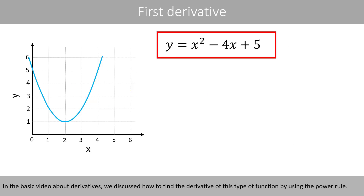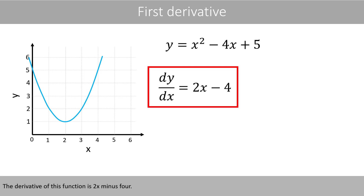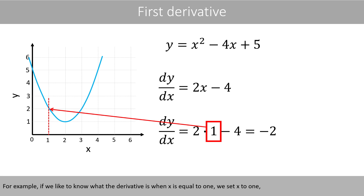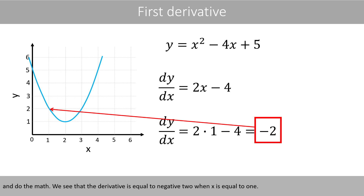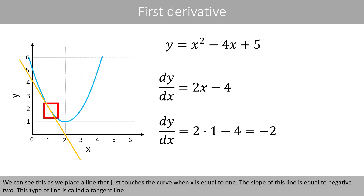In a basic video about derivatives, we discussed how to find the derivative of this type of function by using the power rule. The derivative of this function is 2x minus 4. For example, if we like to know what the derivative is when x is equal to 1, we set x to 1 and do the math. We see that the derivative is equal to negative 2 when x is equal to 1. We can see this as we place a line that just touches the curve when x is equal to 1. The slope of this line is equal to negative 2. This type of line is called a tangent line.